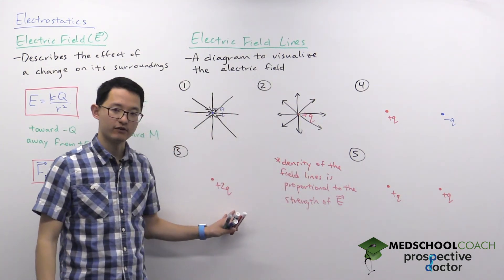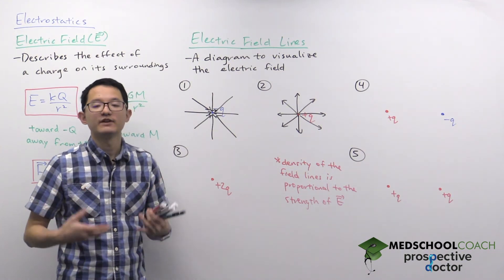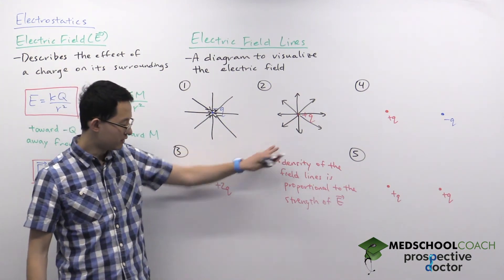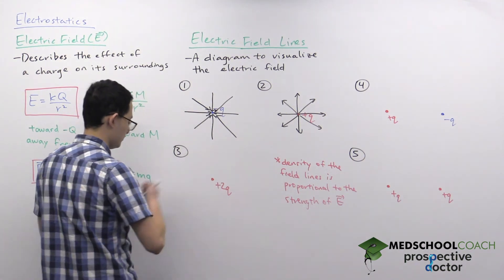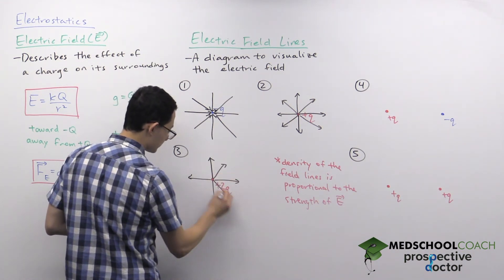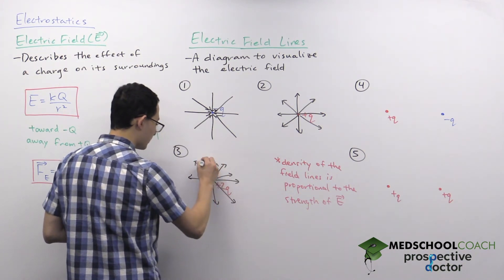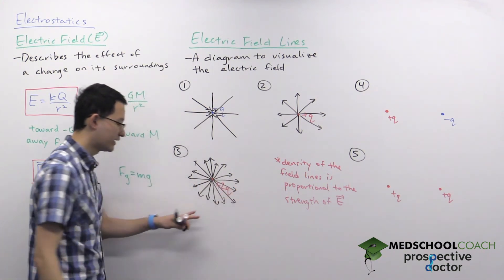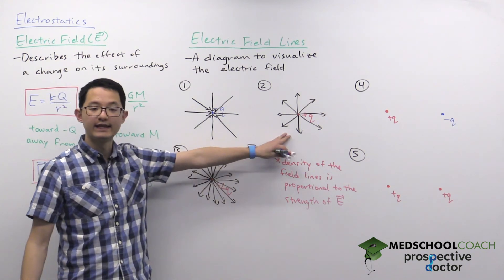You can also use the density of field lines to represent different magnitudes of charges. For instance, if this charge is plus q, how would we draw field lines for a charge of plus 2q? Since it has twice the charge, the electric field is twice as strong, so we draw twice the number of field lines. A greater density of electric field lines indicates a greater magnitude of charge.